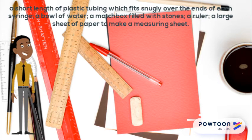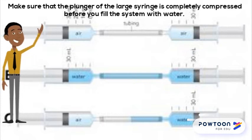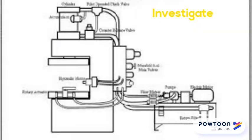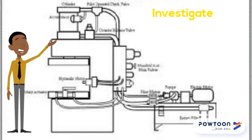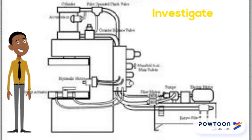Connect the large and small syringes and fill them with water. Remember to do this underwater so that there are no air bubbles in the system. Make sure that the plunger of the large syringe is completely compressed before you fill the system with water. Dry the system off and repeat the steps below for the pneumatic system. Copy the table below and record your results in your workbook.